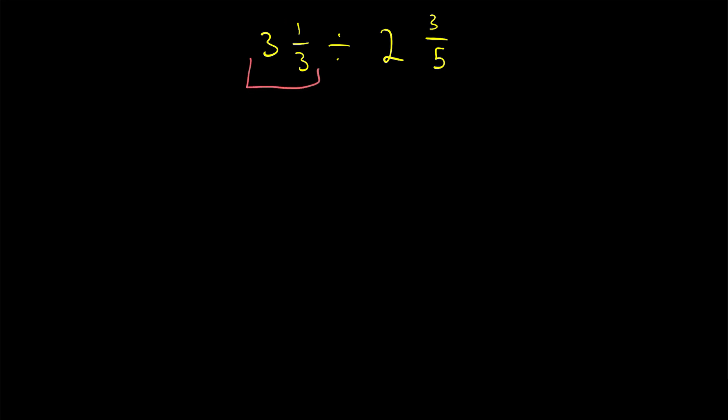To turn 3 1/3 into an improper fraction, multiply the whole by the denominator of the fraction. That's 3 times 3, which is 9. Then add the numerator of the fraction, which is 1, and divide that sum by the denominator. We do the same thing for 2 3/5: 2 times 5 is 10, so we have (10+3) in the numerator, divided by the denominator of 5.